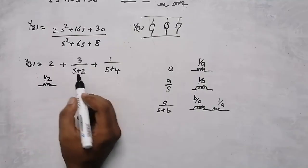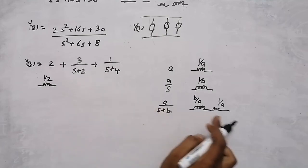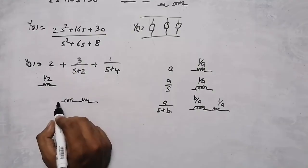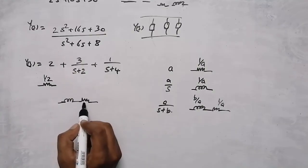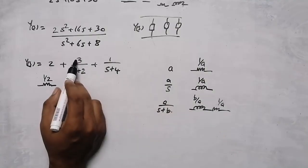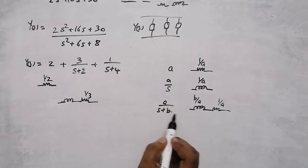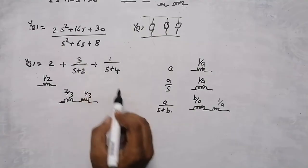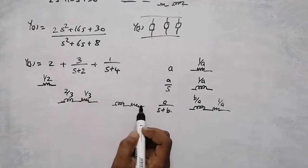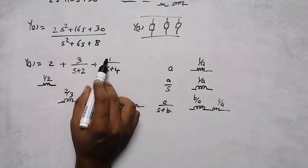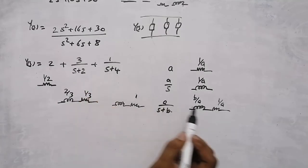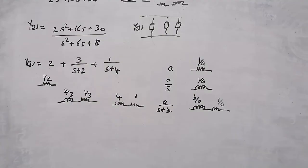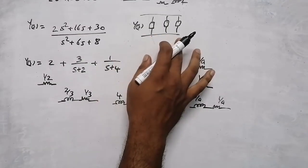Comparing: the constant term 2 gives a resistor of value 1/2 Ω. For the term 3/(s + 2), resistor = 1/3 Ω and inductor = 2/3 H. For the term 1/(s + 4), resistor = 1/1 = 1 Ω and inductor = 4/1 = 4 H.